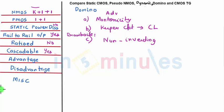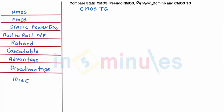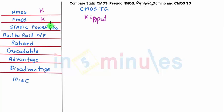Now let's complete the final family: CMOS transmission gates. In CMOS transmission gates, like static logic, there are k inputs — 2-input, 3-input, 4-input — requiring k PMOSes and k NMOSes. Like static, they have no static power dissipation because there's no path from rail to ground.